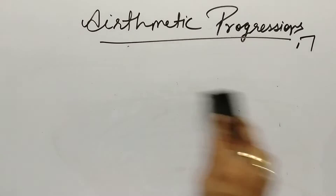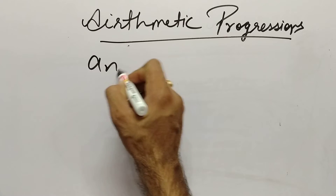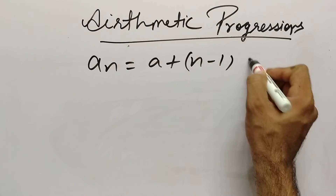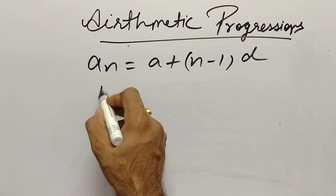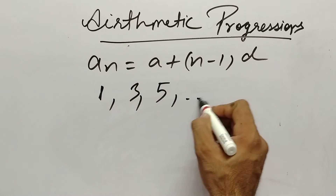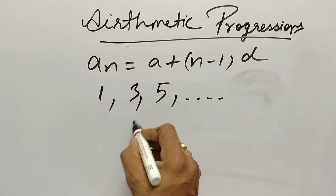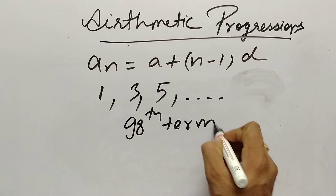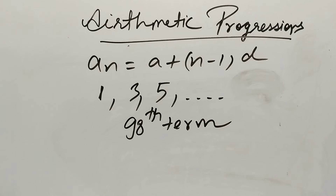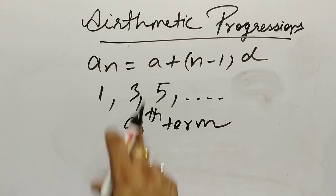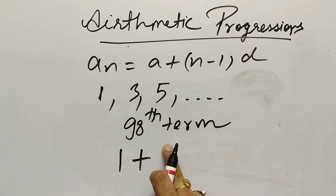AP means a sequence with a common difference. Let's take another example: 1, 3, 5, ... find its 90th term. One way is to keep going 5, 7, 9 and so on. The better way: apply the formula. aₙ equals a plus (n minus 1) into d. a equals 1, n equals 90, so (90 minus 1) equals 89.